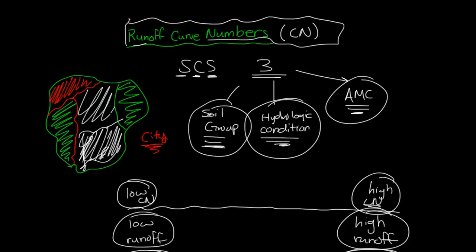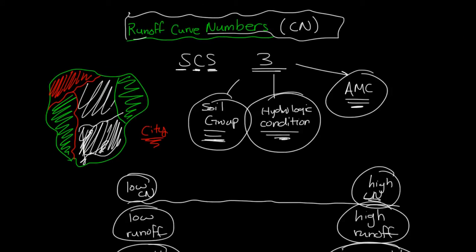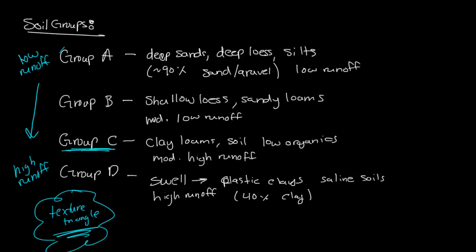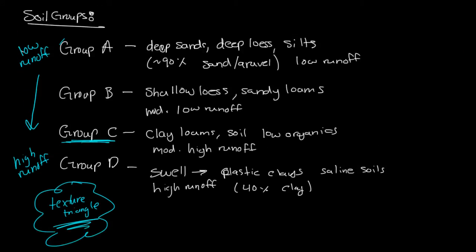Alright, welcome back. We were talking about curve runoff numbers, the three different things they're dependent on. In the last video we just talked about soil groups, group A, B, C, and D.